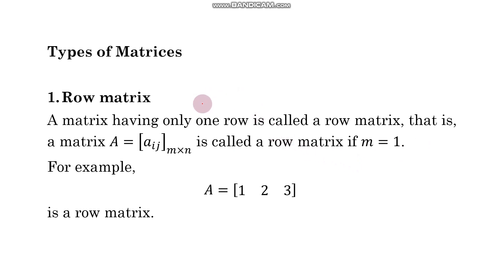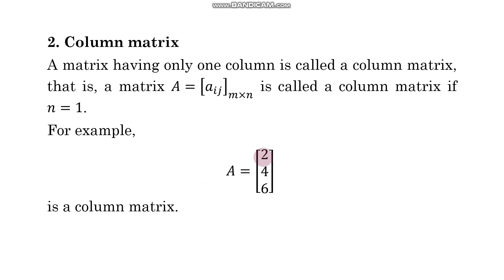Now we will define different types of matrices. A matrix having only one row is called a row matrix. In generalized notation, A = [a_ij] of order m by n is called a row matrix if m = 1, meaning only one row is there. Similarly, a matrix having only one column is called a column matrix, where A = [a_ij] of order m by n is called a column matrix if n = 1.